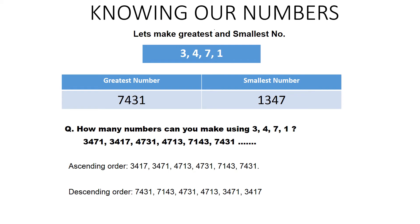We apply the same method to 4731 and 4713 — comparing digit by digit. First we select 4713, then 4731. After that, the next numbers are 7143 and 7431. This gives us our ascending order. For descending order, we simply reverse it — the biggest number comes first and the smallest comes at the end.